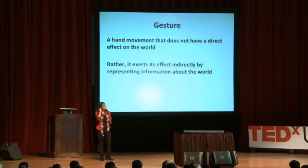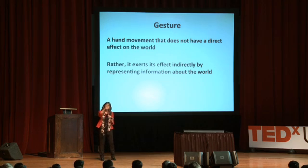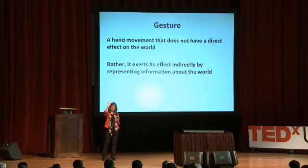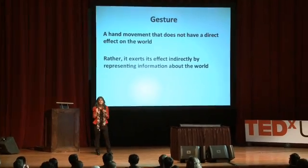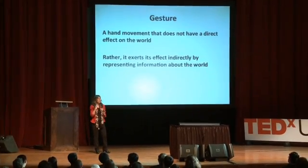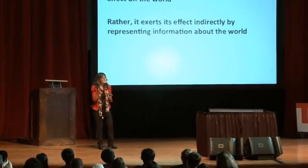Those gestures you can produce right or you can produce wrong. For example, if I do this with my middle finger, that's not the okay gesture. The kinds of gestures I want to talk about are spontaneous gestures, unwitting gestures.